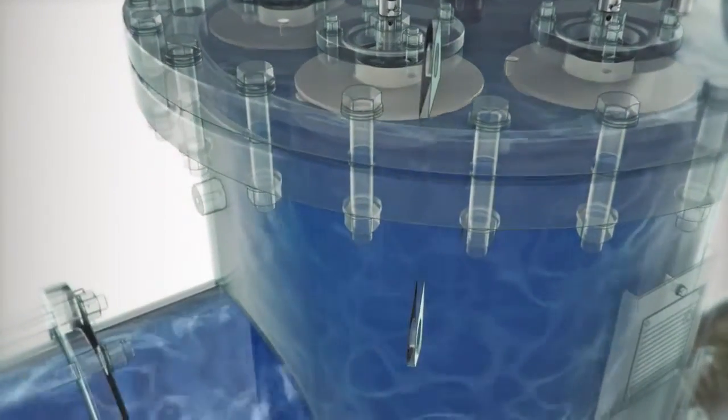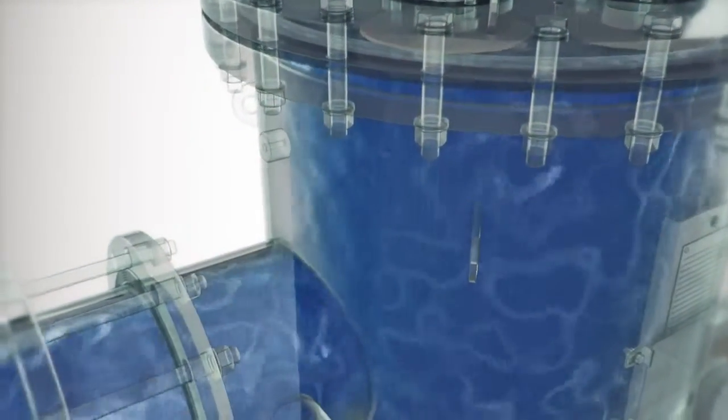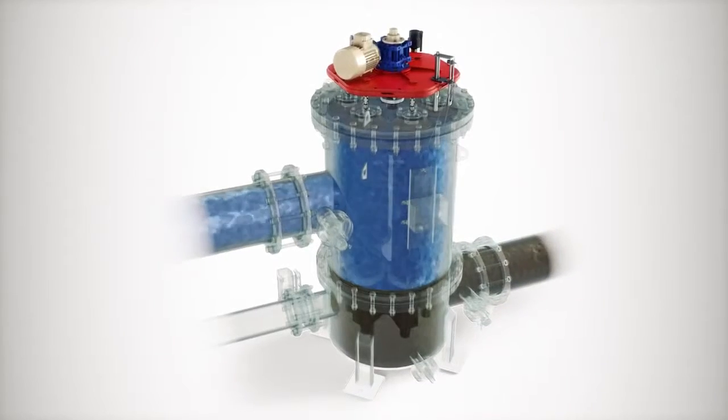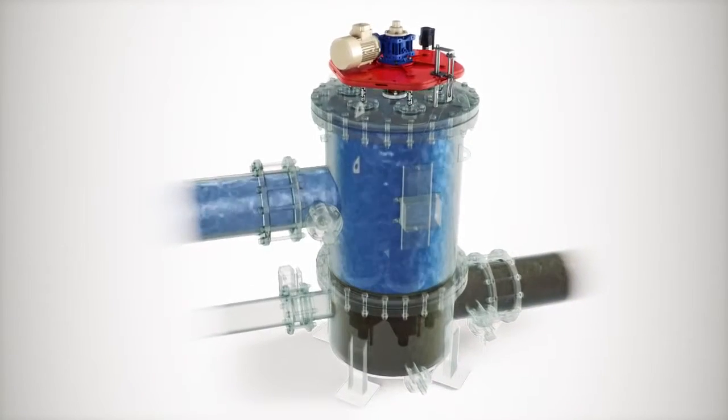The PLC constantly monitors differential pressure development across the filter by means of a DP transmitter. In the process,